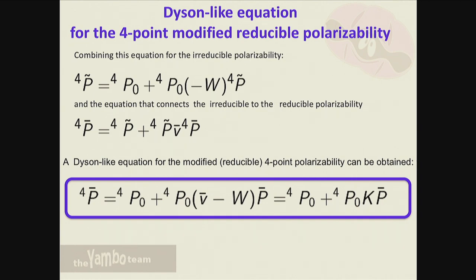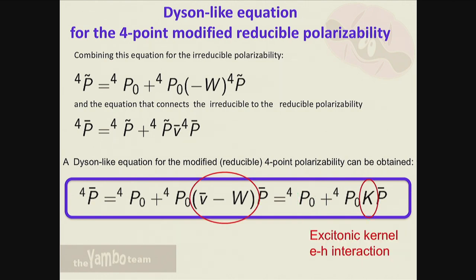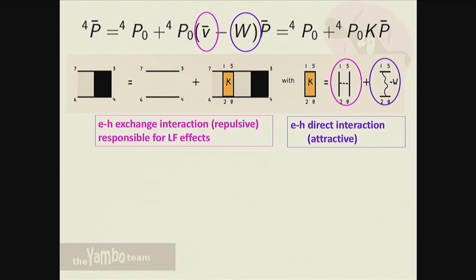You have P0, the free electron-hole propagation, and the kernel with v-bar - explicitly v-bar because I'm interested in the macroscopic quantity - and W, which as you can see is a negative quantity representing the electron-hole attraction. This is what Fulvio showed before; there was an i of difference in the definition but it cancels inside the definition of P. Diagrammatically, the four-point polarizability equation has pi-zero as two independent electron and hole propagations, with the kernel describing the interaction.